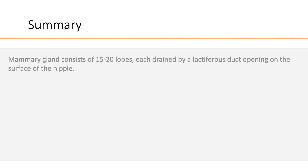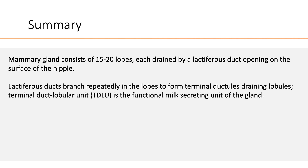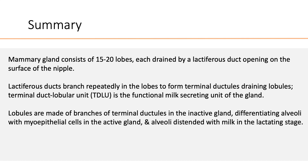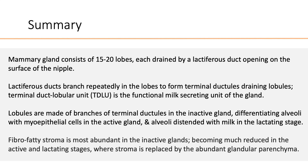To recap: mammary gland consists of 15 to 20 lobes, each drained by a lactiferous duct opening on the surface of the nipple. Lactiferous ducts branch repeatedly in the lobes to form terminal ductules draining lobules. This terminal duct lobular unit is the functional milk secreting unit of the gland. Lobules are made up of branches of terminal ductules in the inactive gland, differentiating alveoli with myoepithelial cells in the active gland, and alveoli distended with milk in the lactating stage. Fibro-fatty stroma is most abundant in the inactive gland, becoming much reduced in the active and lactating stages where it is replaced by abundant glandular parenchyma.